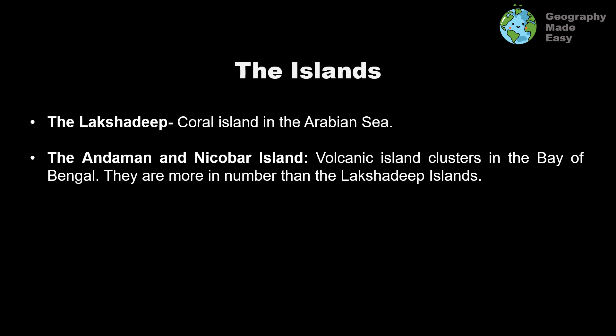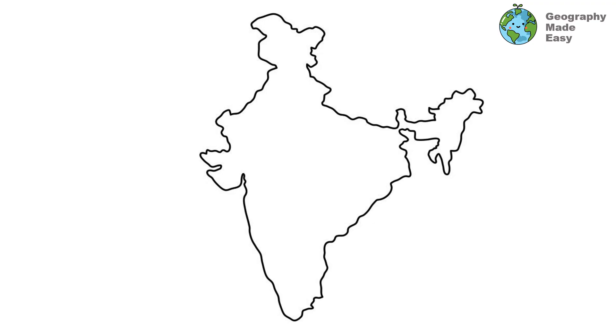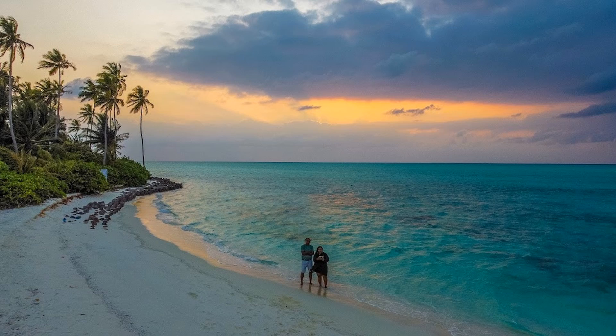We have two sets of islands. The Lakshadweep Islands are coral islands present in the Arabian Sea. The Andaman and Nicobar Islands are a volcanic island cluster in the Bay of Bengal, larger in number. The Andaman and Nicobar Islands have volcanic activity including mud volcanoes, and a dormant volcano called the Barren Island volcano is present there.